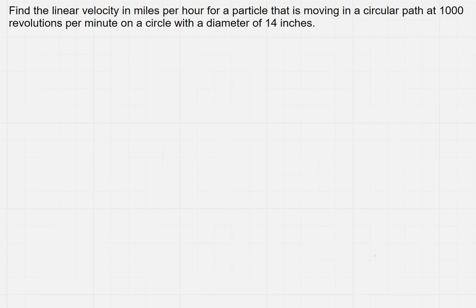We want to find the linear velocity in miles per hour for a particle that is moving in a circular path at 1,000 revolutions per minute on a circle with a diameter of 14 inches. So the first thing I know is I need to write down that formula: V equals S over T.